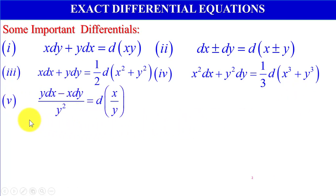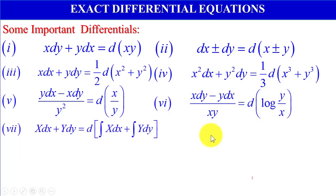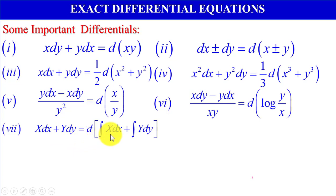Fourth, x squared dx plus y squared dy equals one third d(x cubed plus y cubed). Fifth, y dx minus x dy divided by y squared equals d(x/y). Sixth, x dy minus y dx divided by xy equals d(log(y/x)).